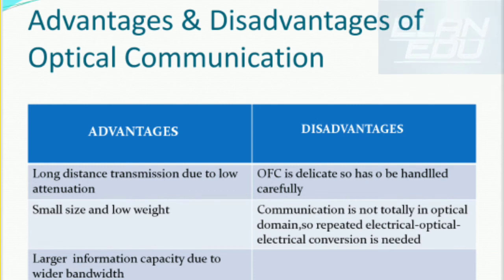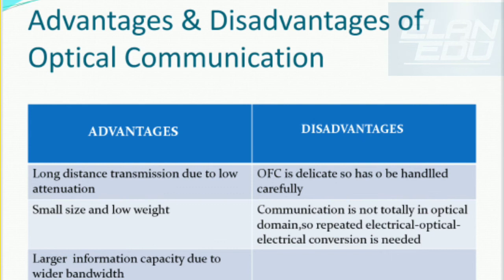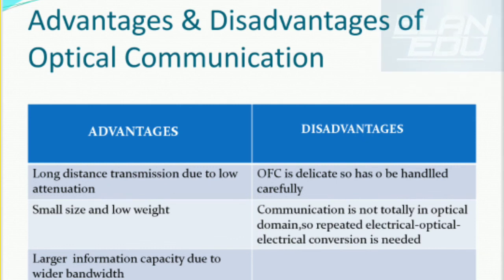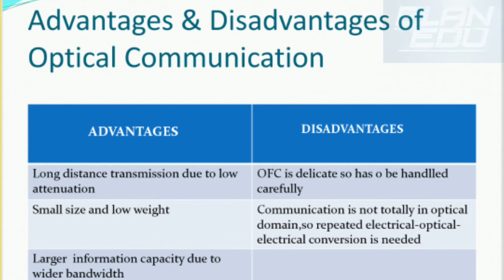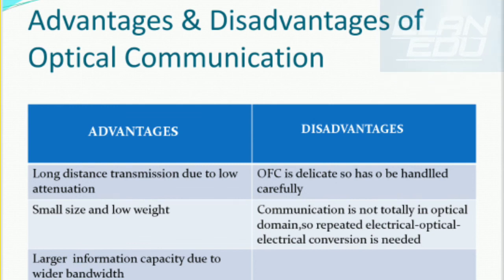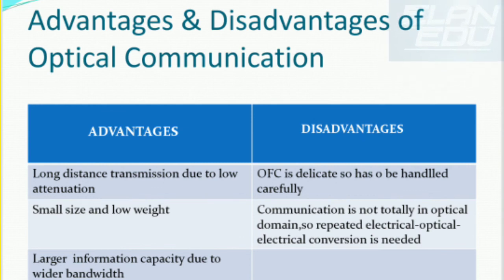Now let us see the advantages and disadvantages of optical communication. The advantages are: first, optical fiber allows transmission over longer distances with low attenuation. Second, the optical fiber cable is very small in size and has very low weight. Third, it offers high information-carrying capacity over longer distances, achieved easily with the help of wider bandwidth.